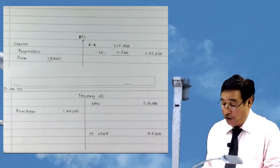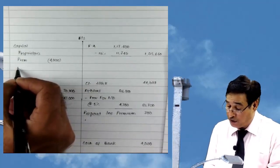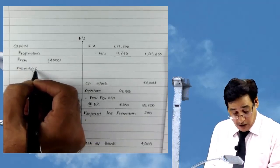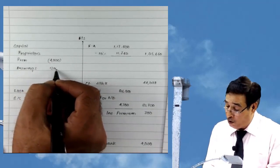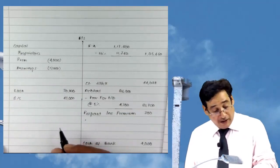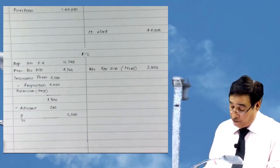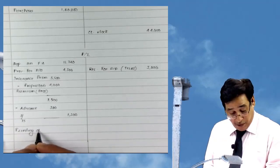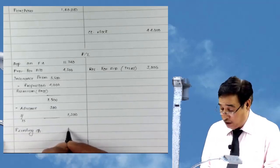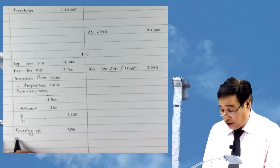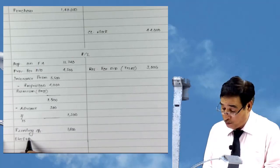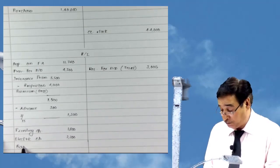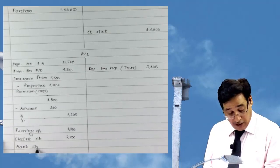Drawings given in the trial shall be directly subtracted from the capital account: drawings 12,000 — only one treatment because the item relates to trial. Printing charges: 1,800. Electric charges: 2,200. Bank charges: 1,600.